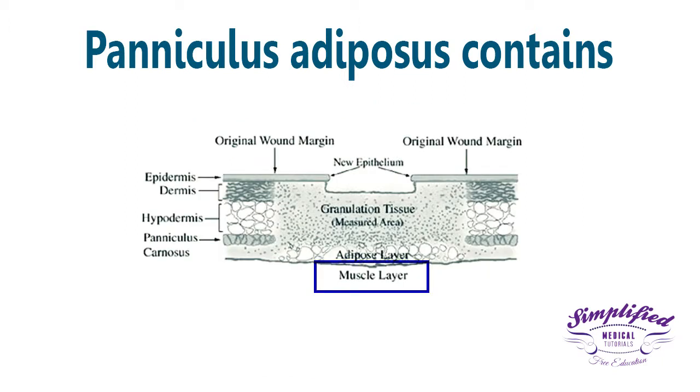Paniculus adiposis also contains bursae only in the space overlying the joints, in order to facilitate the smooth passage of the overlying skin. It also contains sheaths of muscle called the paniculus carnosis.